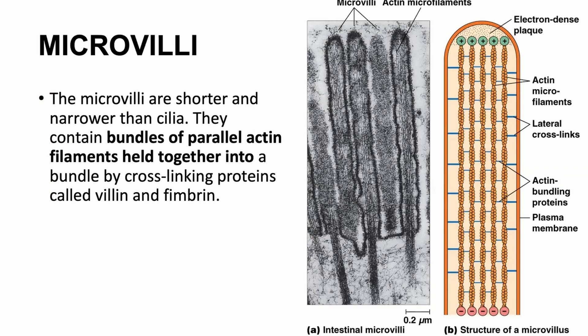The cilia are there to trap particles from the external environment — basically like a filter. When you breathe in, you're interacting with the external environment. You can bathe off your skin, but you can't bathe the air you breathe. It's only logical that ciliated epithelium is present in the respiratory system to act as a filter for the air going through the lungs. Microvilli are shorter and narrower than cilia; they contain bundles of parallel actin filaments.